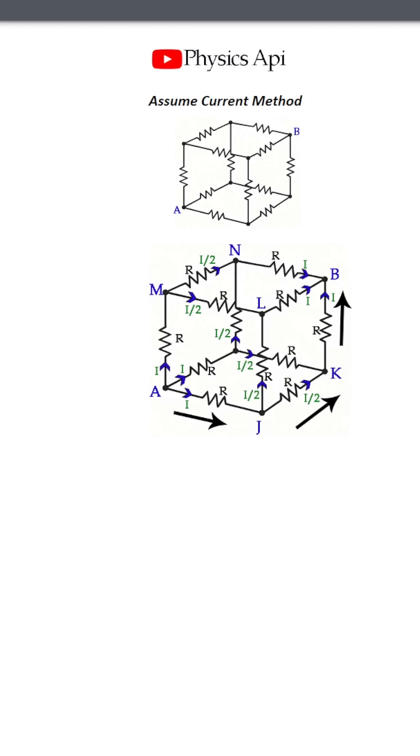At the next junctions, due to symmetry, each current splits into two equal paths. Let's focus on one path: A, J, K, B.